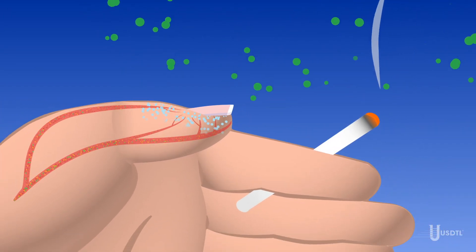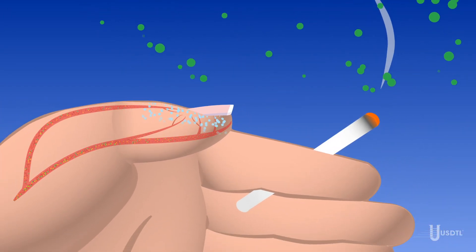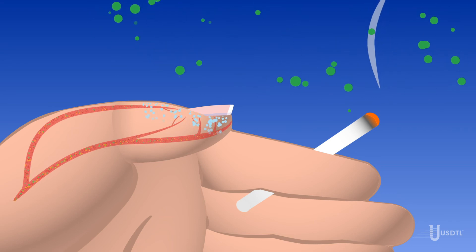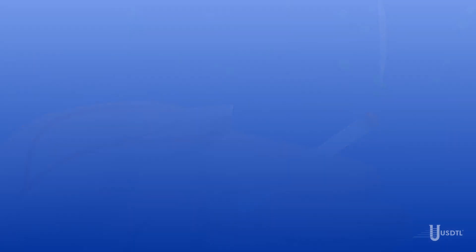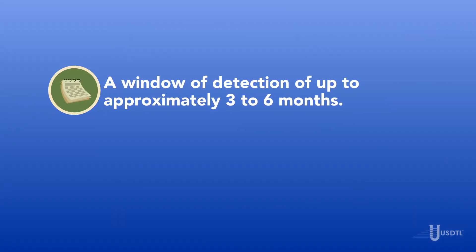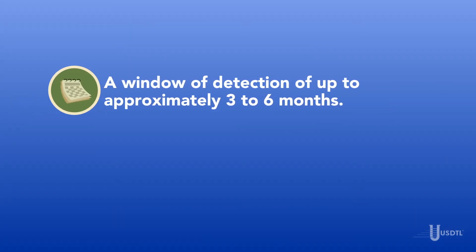These four very different incorporation routes are layered on top of each other continuously, rendering a very complex drug history. The growth cycle of nail and routes of incorporation gives nail clippings a window of detection of up to approximately three to six months.